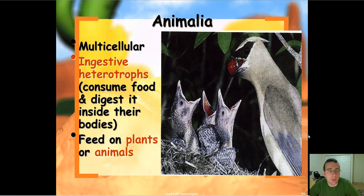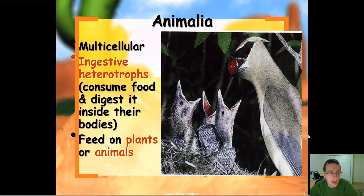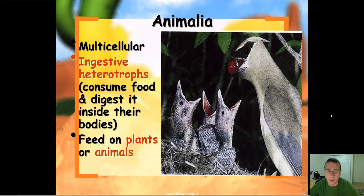The last taxonomy group we want to discuss is going to be the animal group. All animals are multicellular organisms with very complex, highly specialized cells. And all of them are going to be ingestive heterotrophs — they must consume food to survive. Most of them feed on plants, animals, or fungus, some even on smaller things like protists. They are ingestive in the sense that they must swallow their food and digest inside their bodies, rather than outside the way fungi do it.